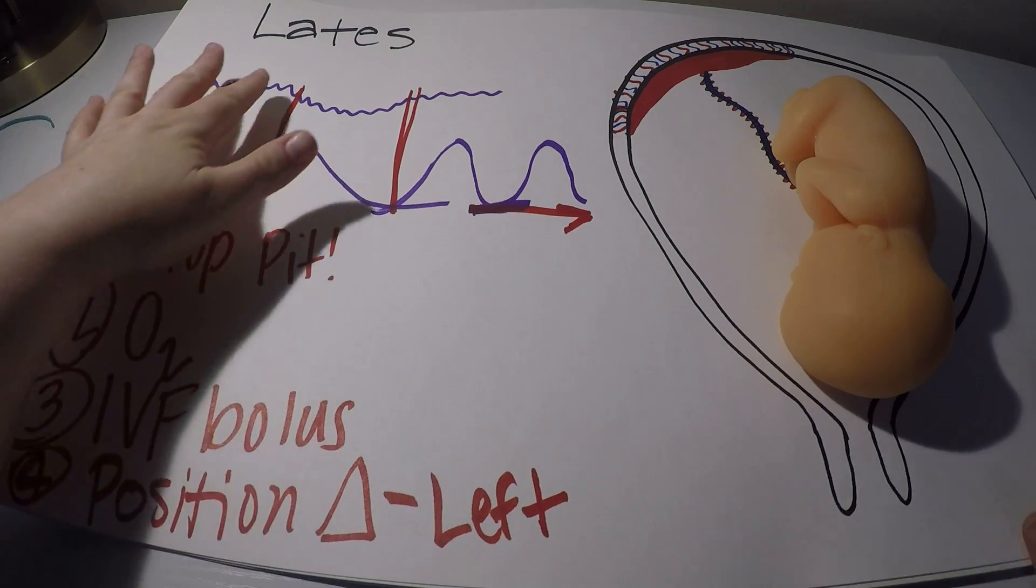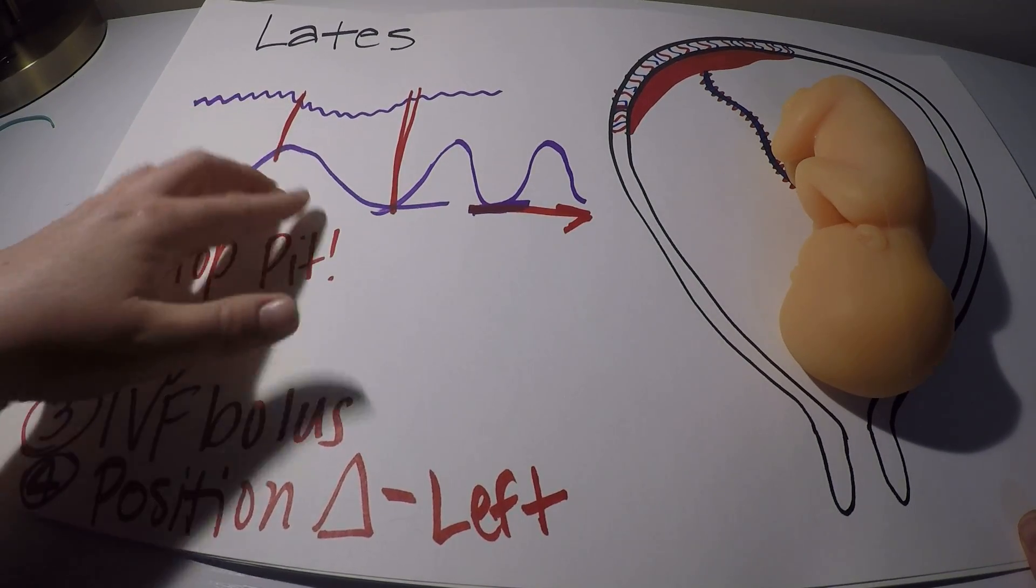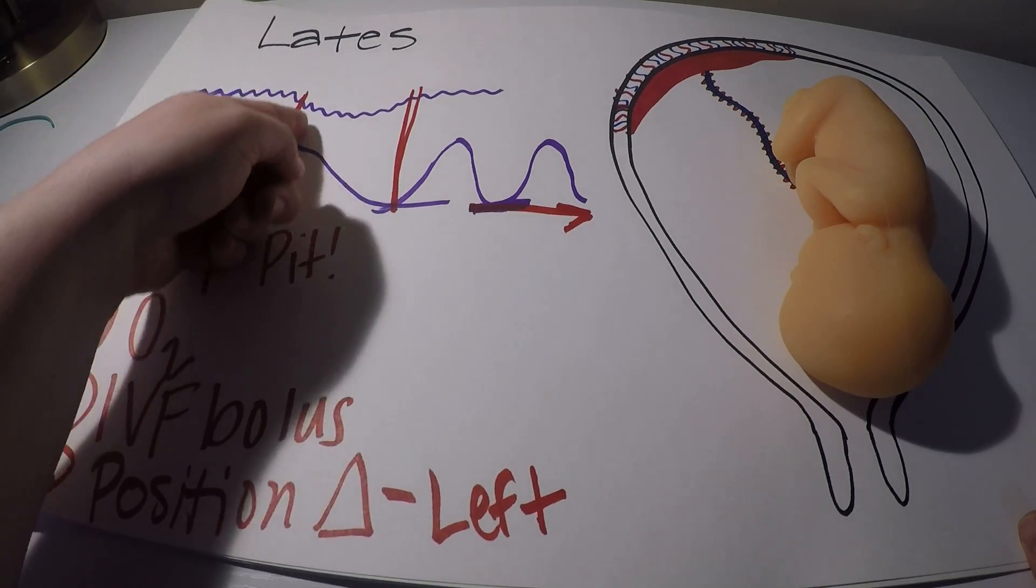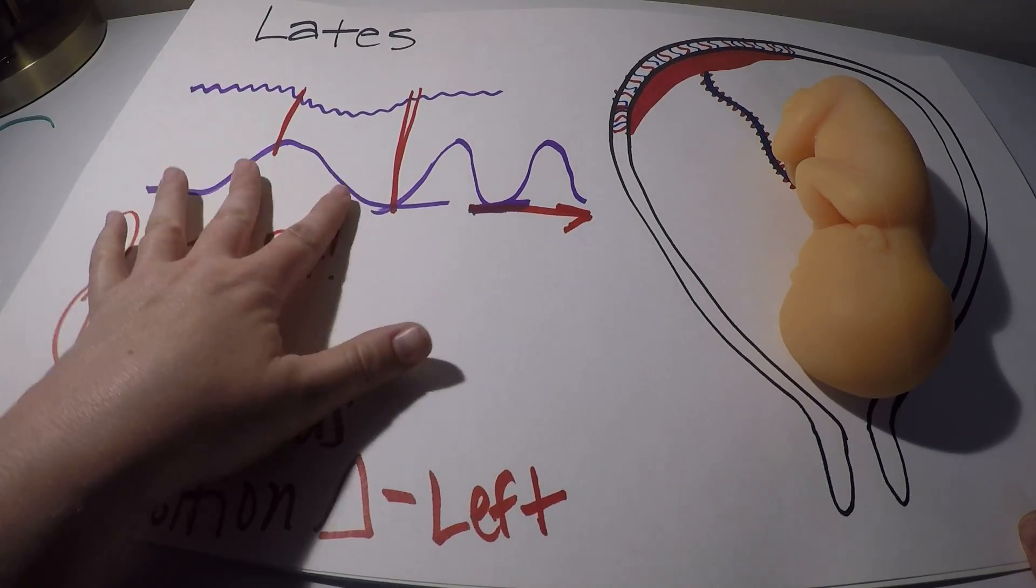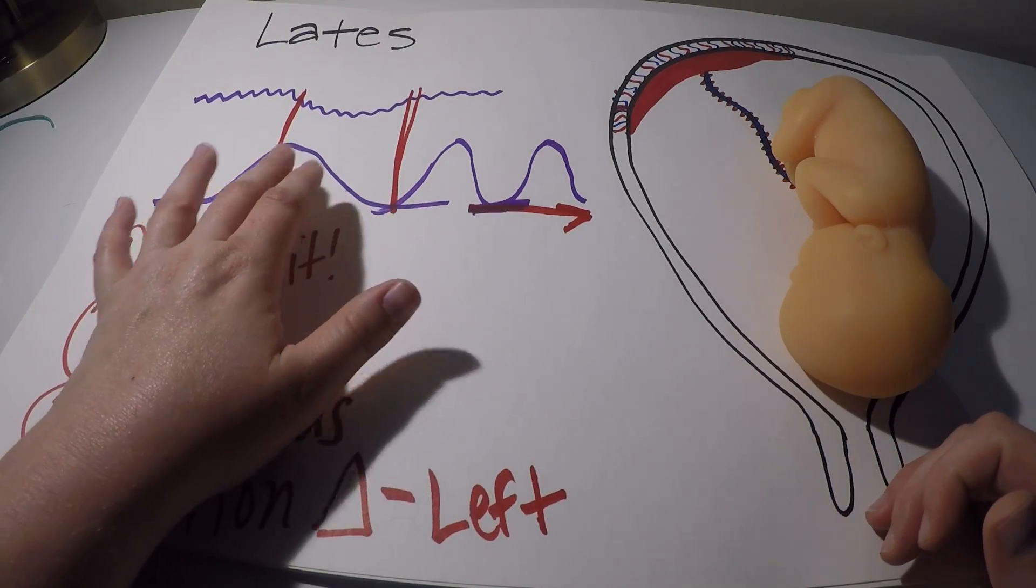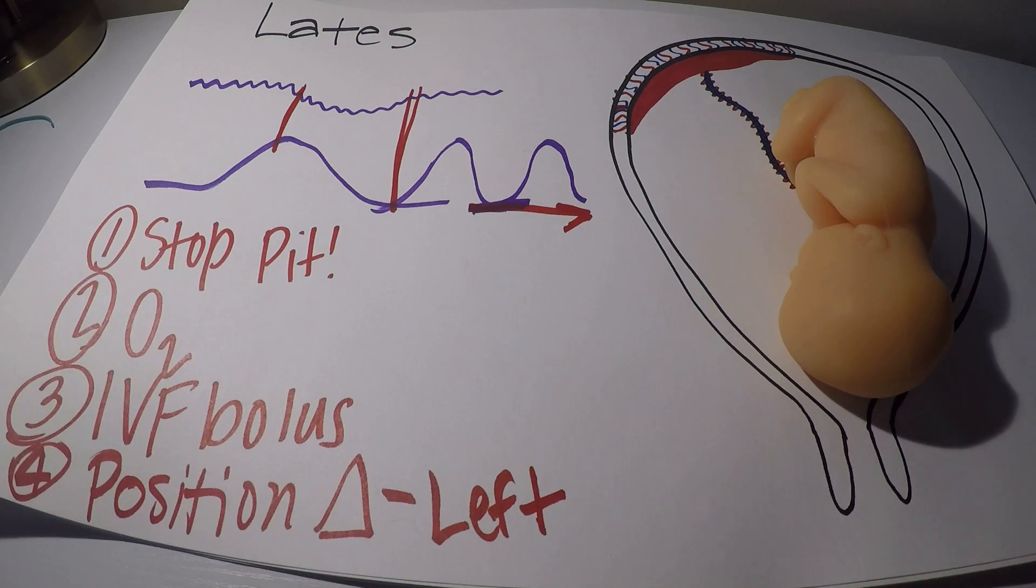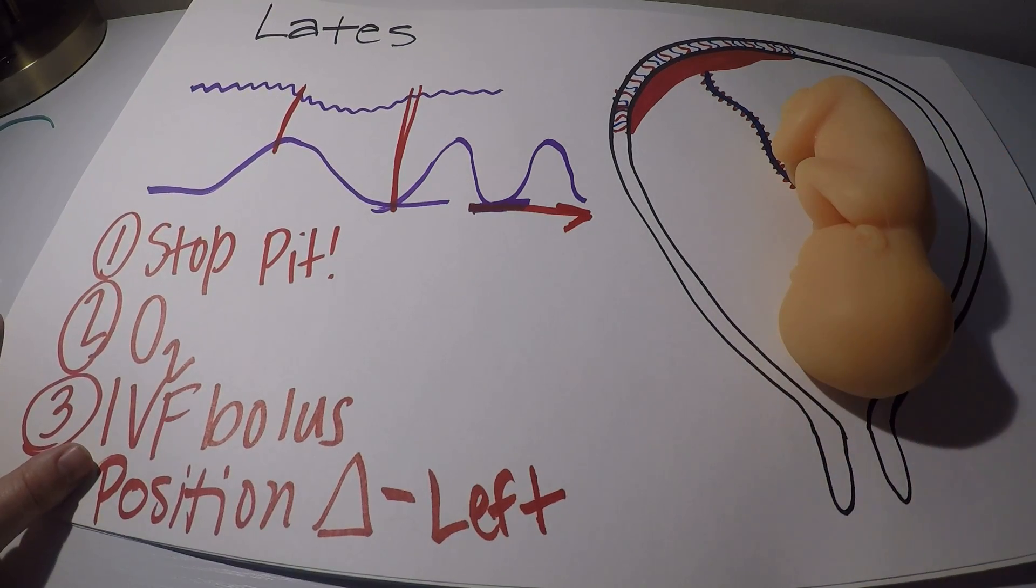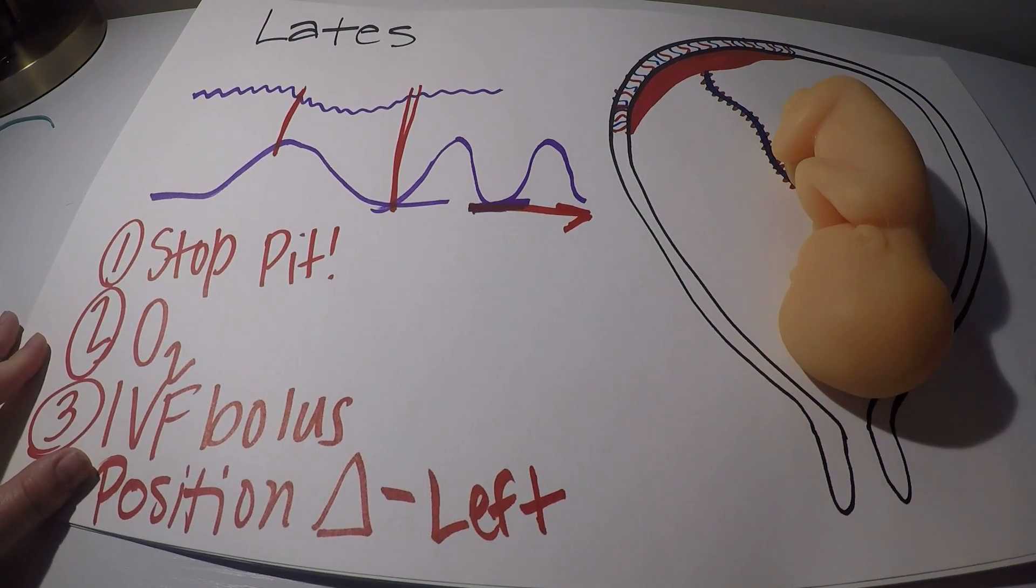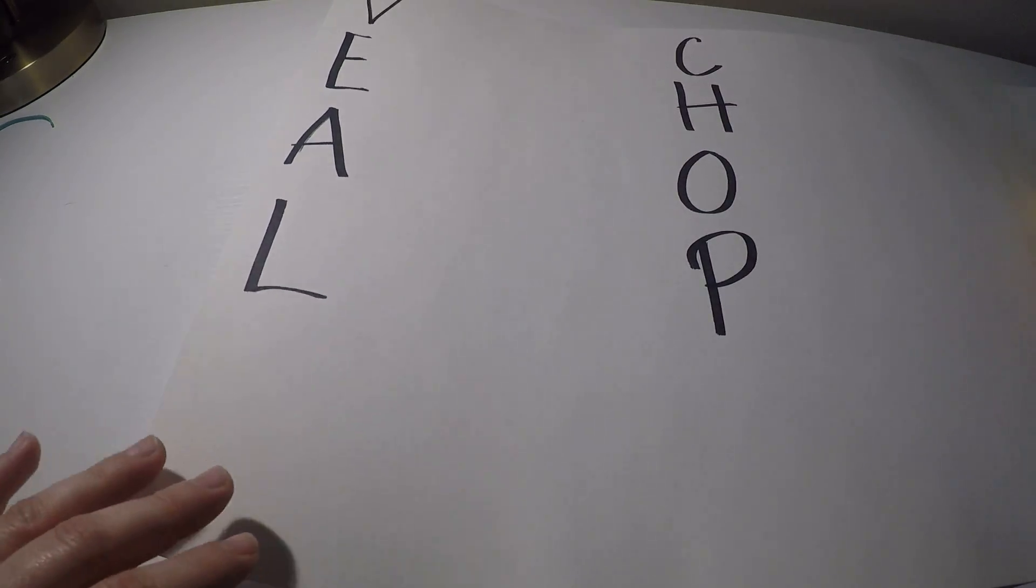The lates are trouble. Lates and earlies can look pretty close to each other because they're both kind of a gradual onset. They're not super quick like our variables were. So it's the timing that you really have to look at in relation to the contraction. The earlies are going to mirror the contraction. The lates are going to start late in the contraction. So a little saying I always like to remember is it's always okay to be early to dinner, but it's never okay to be late.